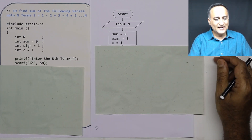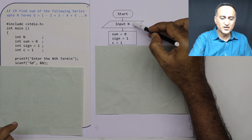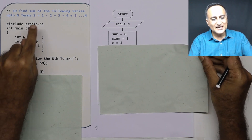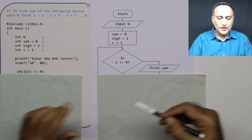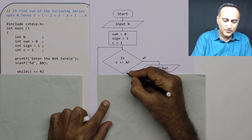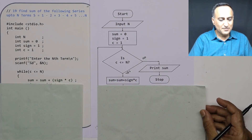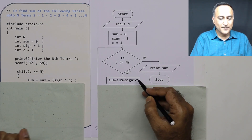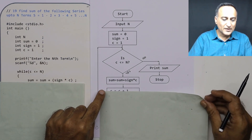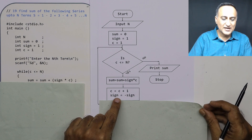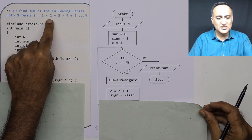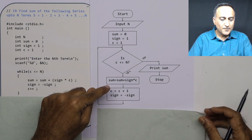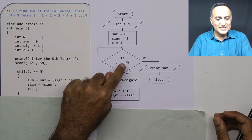I ask the user to enter the nth term, which is read into n. As long as c is less than or equal to n, I do a loop. If true, sum = sum + sign * c. Initially sign is 1, sum is 0, so 0 + 1×1 = 1. Then sign becomes negative — I multiply sign by minus sign, so plus becomes minus. c becomes 2 for the next number. The steps are: sign = sign * (−1), c++.